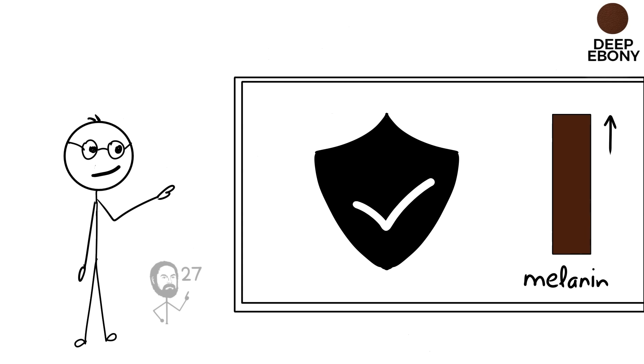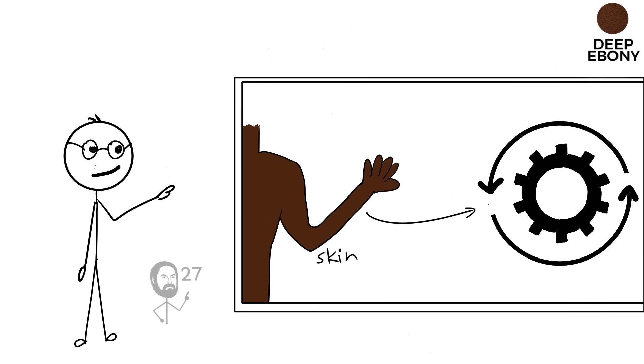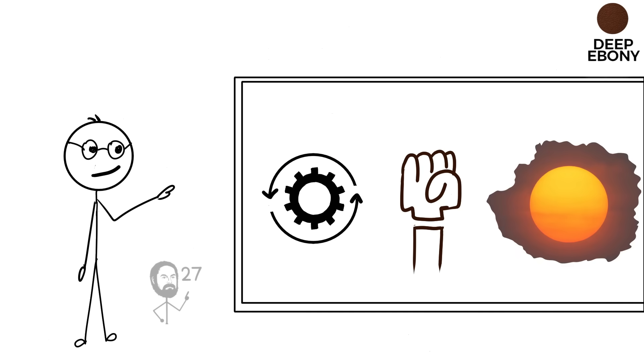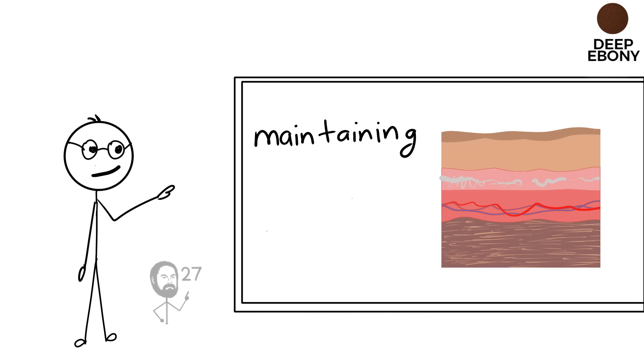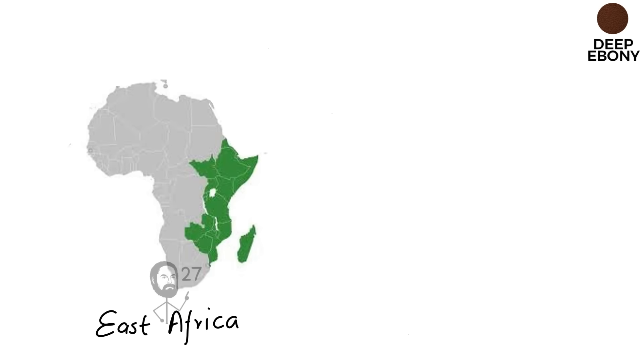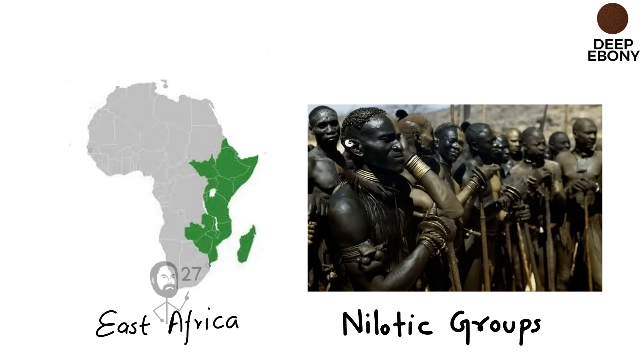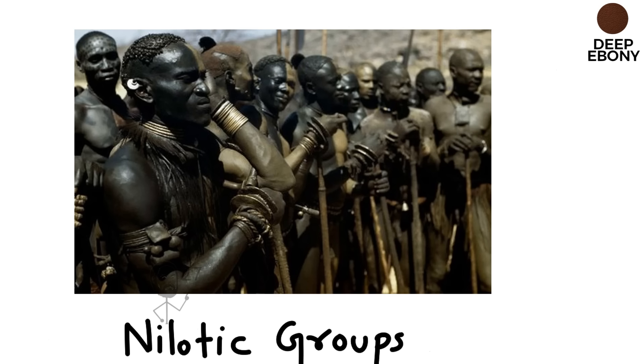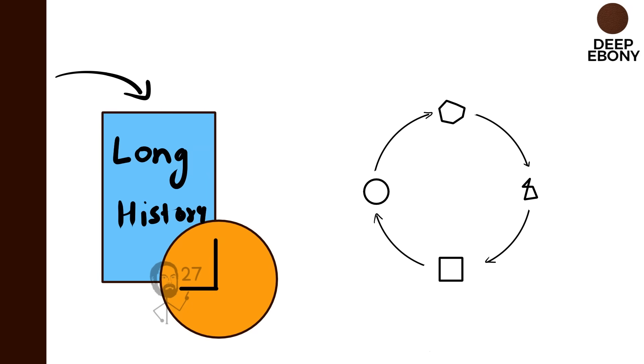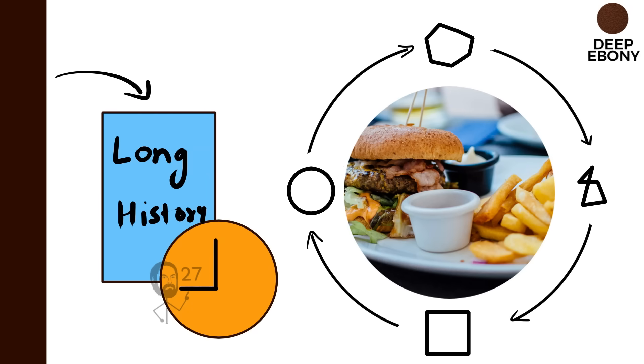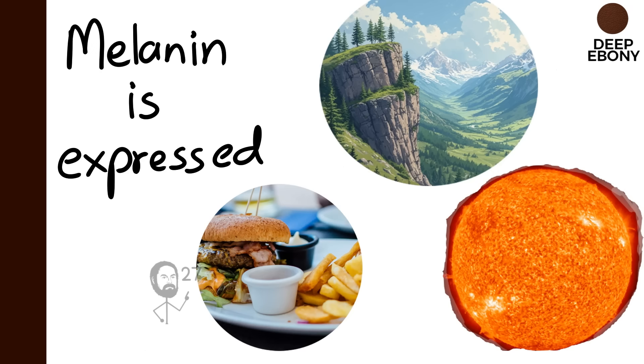Beyond its protective qualities, this skin type demonstrates remarkable efficiency in resisting the harmful effects of prolonged sun exposure while maintaining overall skin integrity. Populations in East Africa, such as the nilotic groups, exhibit this phenotype most prominently. The tone itself reflects a long history of adaptation to extreme sunlight, high altitudes, and varied diets that also influenced how melanin is expressed.